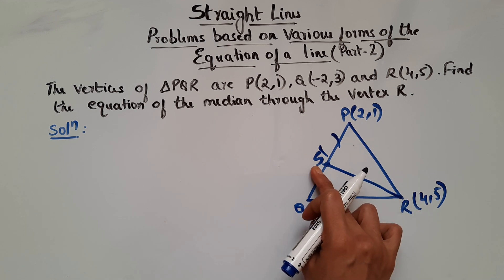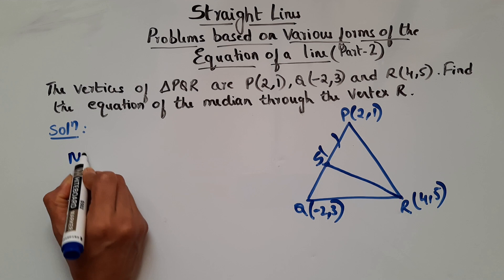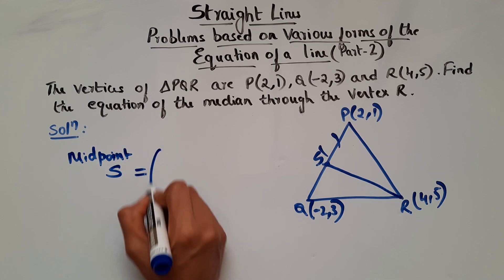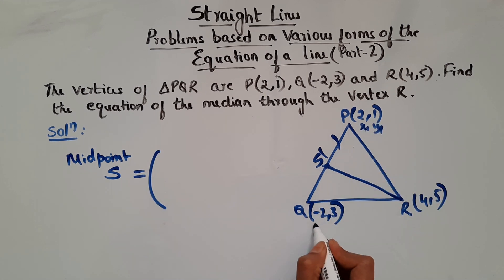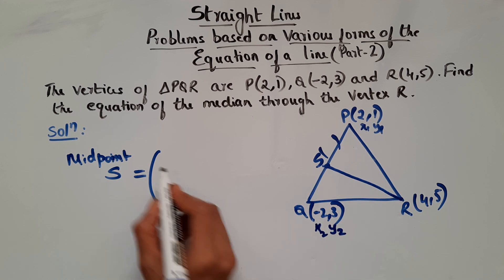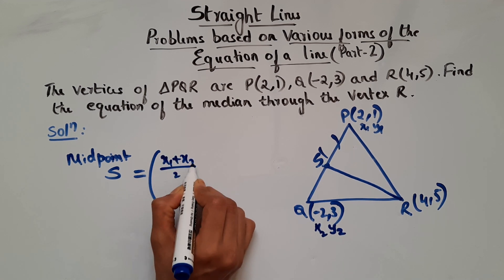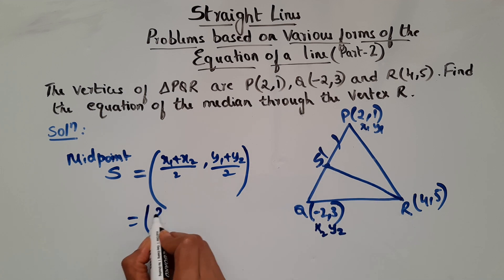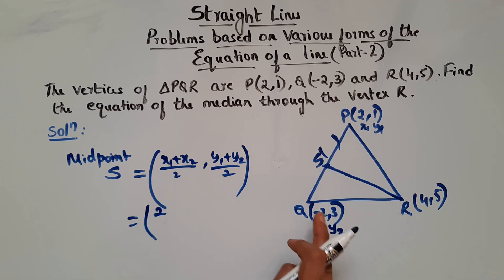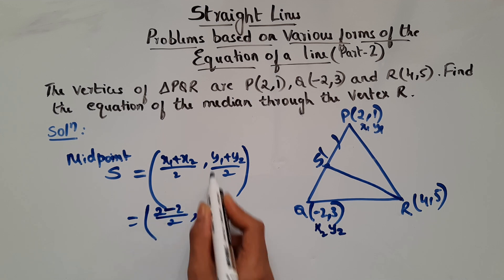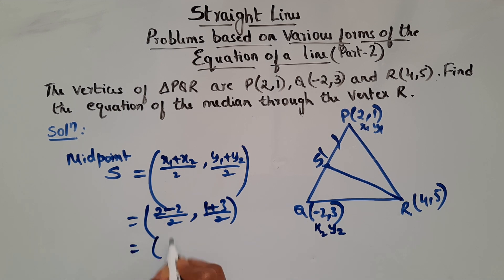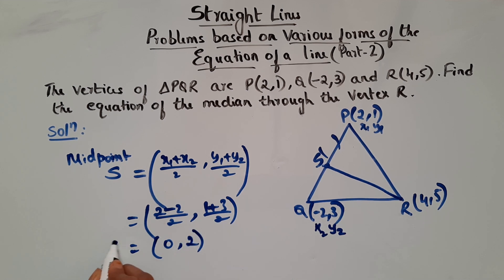Since it is a midpoint, we know the midpoint formula. So the midpoint S is equal to (x1+x2)/2, (y1+y2)/2. So here x1 is 2, x2 is -2, so (2 + (-2))/2 = 0/2 = 0. And y1 is 1, y2 is 3, so (1+3)/2 = 4/2 = 2. So point S is (0, 2).